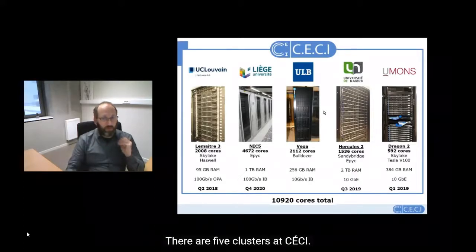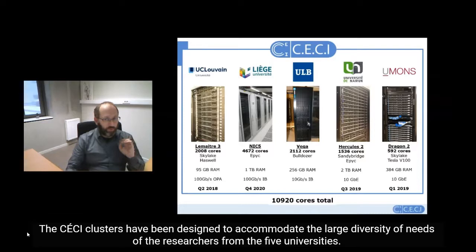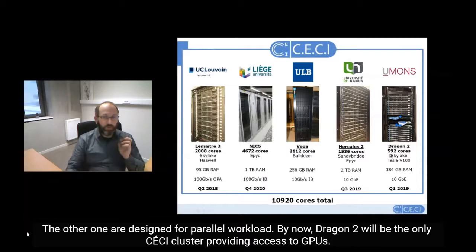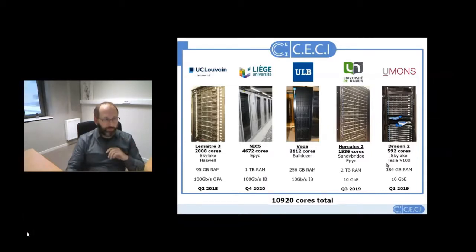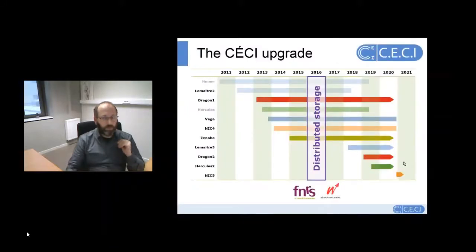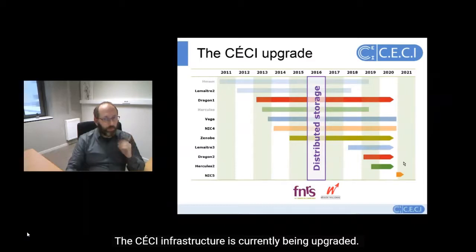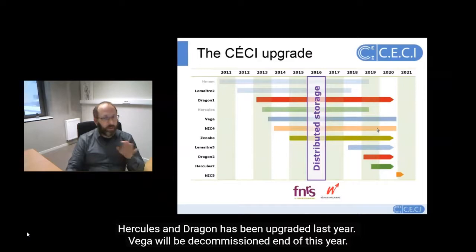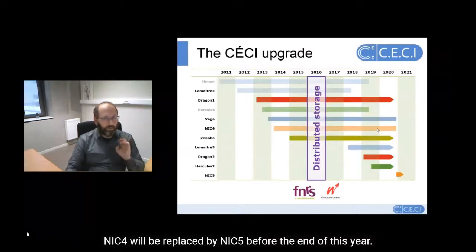There are five clusters at CECI. The CECI clusters have been designed to accommodate the large diversity of needs of researchers from the five universities. Several clusters are designed for sequential workloads — this is the case for Hercules and Dragon. The others are designed for parallel workloads. Dragon 2 is the only CECI cluster that provides access to GPUs. The CECI infrastructure is currently being upgraded: Lemaitre 3, located at UCLouvain, was upgraded in 2018. Hercules and Dragon were upgraded last year. Vega will be decommissioned at the end of this year and will be replaced by NIC 5.